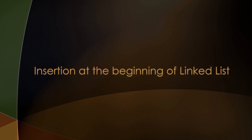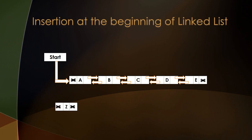Next we'll begin by insertion at the beginning of a linked list. We'll be inserting node Z before node A. Since node Z is a newly created node, it will always have both its pointers set to null. The first step is to change the forward pointer of node Z to point to node A, since node A will now be the second node and node Z will be the first node.